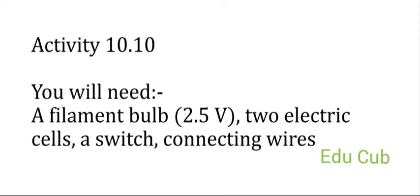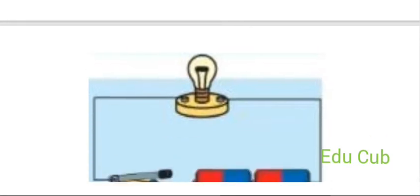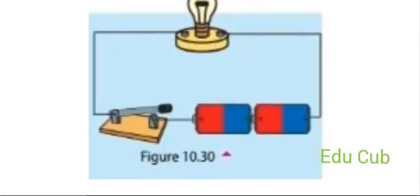To check whether the heating effect of electric current exists, we have to do an activity. We will need a filament bulb, two electric cells, a switch, and connecting wires. Connect the bulb, two electric cells, and the switch. Touch the glass cover of the bulb, then close the switch and let electric current flow for a few seconds.